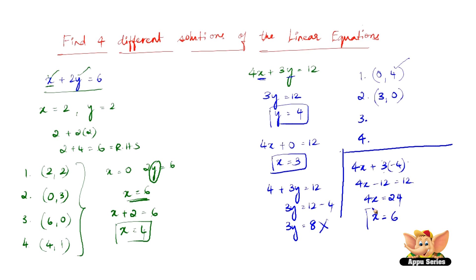So 12 plus 12 is 24 and yes, we have a value for x. We have x equals 6. So when y equals minus 4, we have x as 6. So we have another solution here, which is 6 comma minus 4.